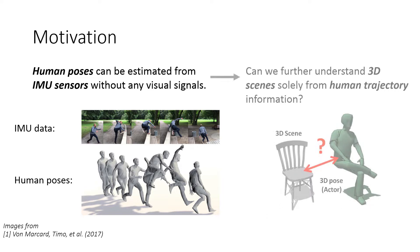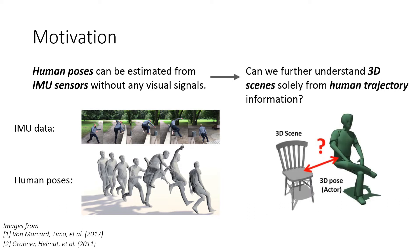Inspired by this, we pose the question: can we reason about object structure in 3D environments only from human pose trajectory information? Our intuition is that people moving in a 3D scene often interact both passively and actively with objects in the environment, which gives us strong cues about likely objects and their locations.